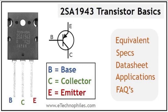Welcome to Electronex YouTube channel. In this video, I will talk about the 2SC5200 transistor complete details, working principle, advantages, and disadvantages. The 2SC5200 is a high-power NPN bipolar junction transistor (BJT) designed for audio amplifier and high-power switching applications. Manufactured by Toshiba, this transistor is widely used in audio amplifiers, power amplifiers, inverters, and switching power supplies due to its high power handling capacity and low distortion.